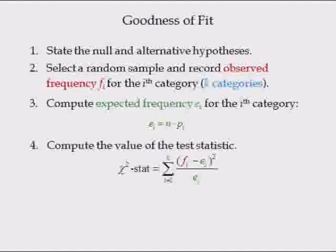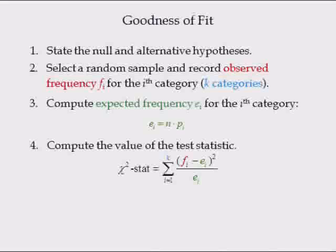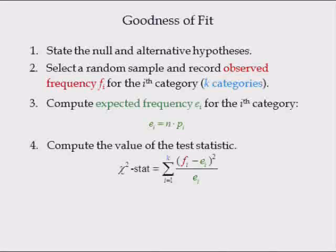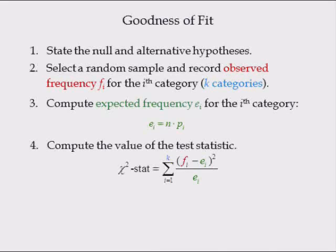Compute the value of the test statistic, which is denoted chi-square stat. It is found by squaring the k deviations of the observed frequency, f_i, from its expected frequency, e_i, dividing each of these by the expected frequency e_i, and then summing all k of the resulting ratios.